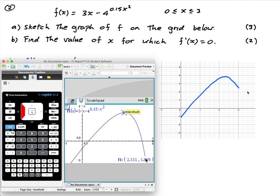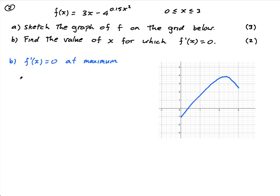And then you don't even have to get the derivative. You just go to the maximum and it's here. It's 2.331. So x equals 2.331 or approximately equal to 2.33. And that's it.